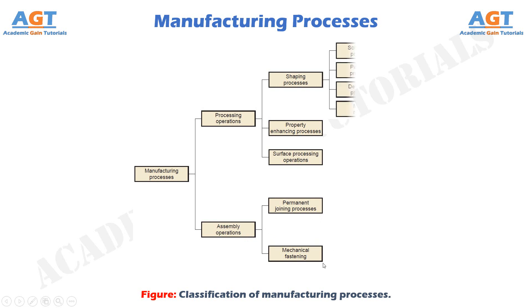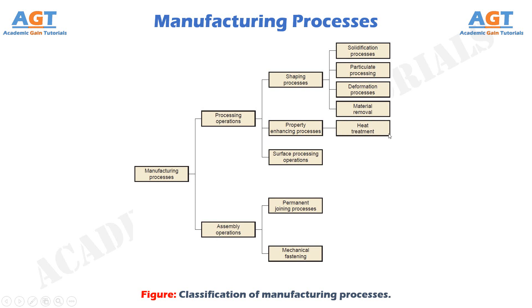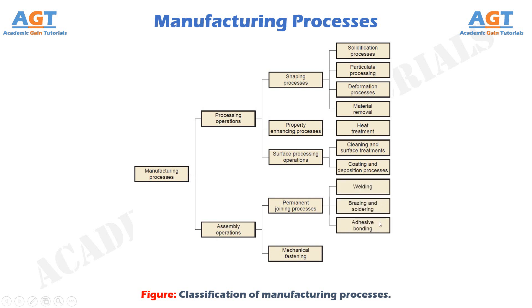The shaping processes can be divided into four types: solidification processes, particulate processing, deformation processes, and material removal. The property enhancing processes include processes like heat treatment. The surface processing operations include cleaning and surface treatments, as well as coating and deposition processes. The permanent joining processes include welding, brazing and soldering, and adhesive bonding. The mechanical fastenings include the use of threaded fasteners and permanent fastening methods.